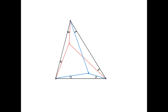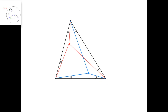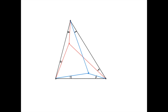Now we're going to define the concept of isogonal points. Suppose we have a point in the plane of a triangle. We can associate this point with a different point in the plane, called its isogonal point with respect to the triangle, if this angle equals this angle, this angle equals this angle, and this angle equals this angle — meaning the connecting lines from each vertex are pairwise isogonal.